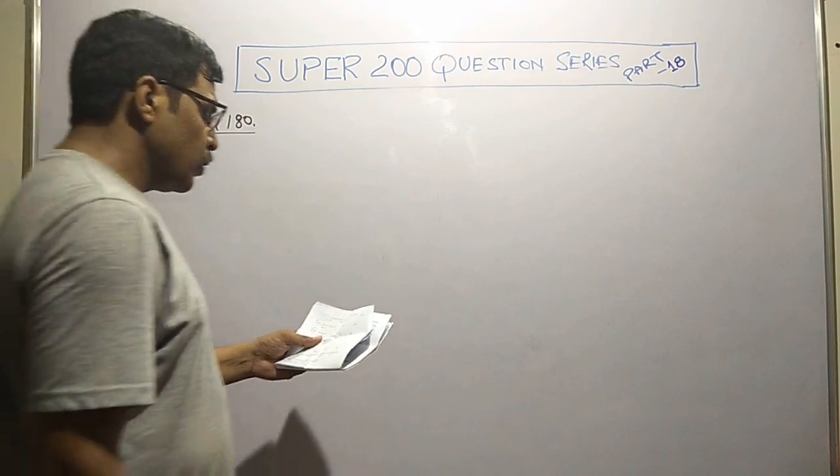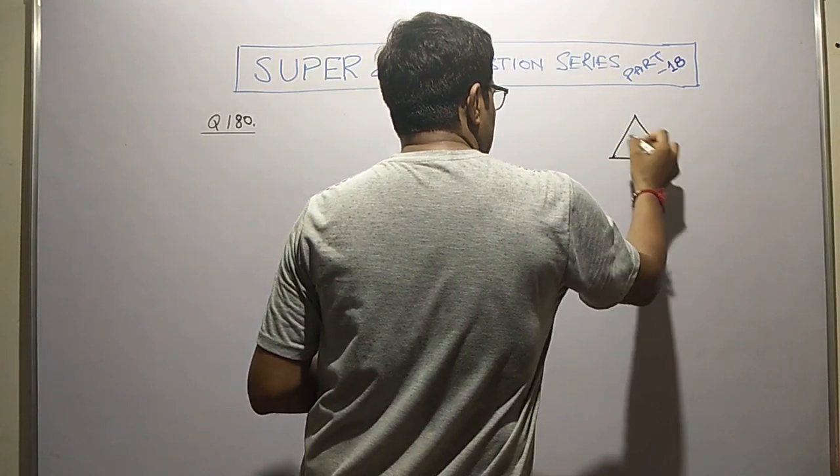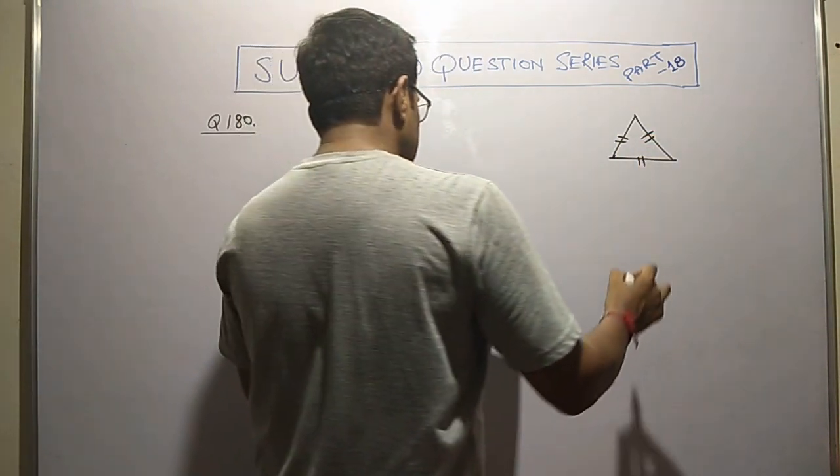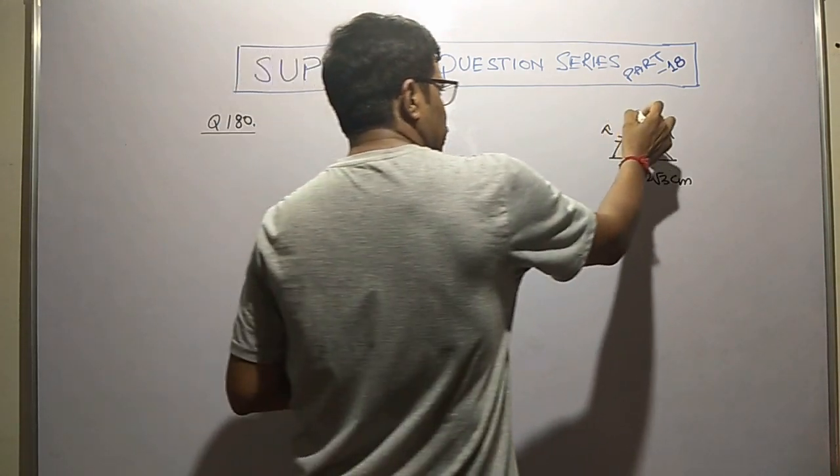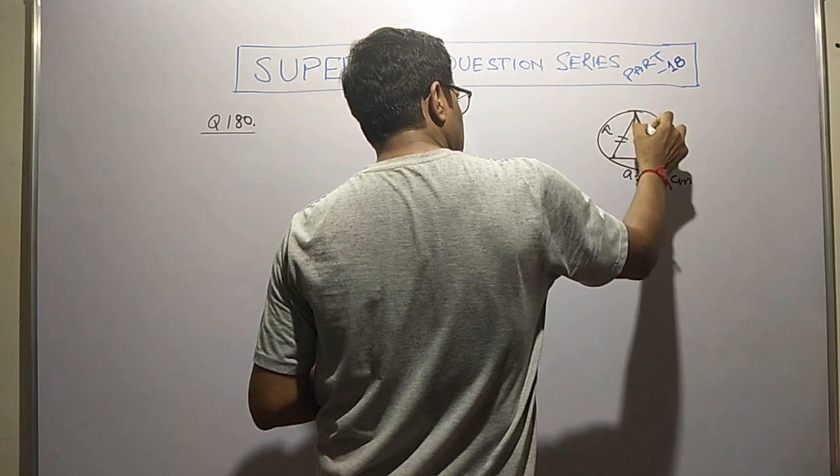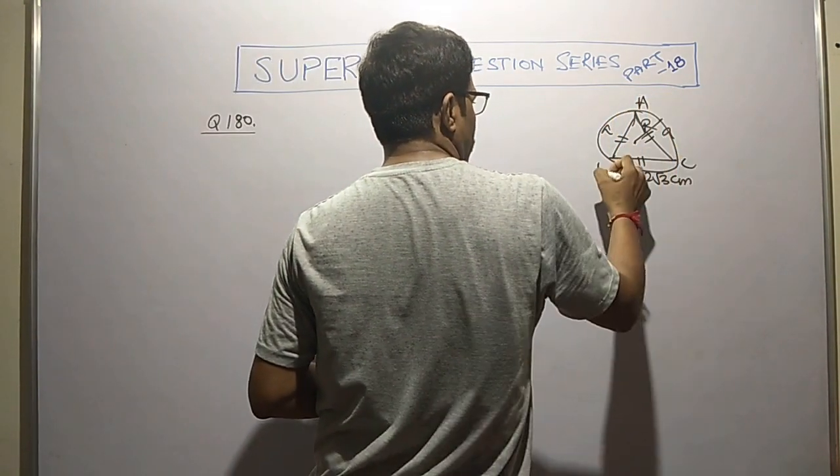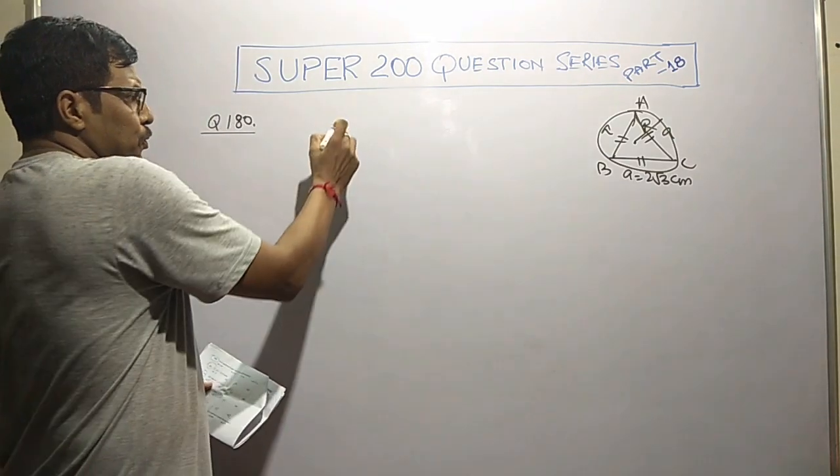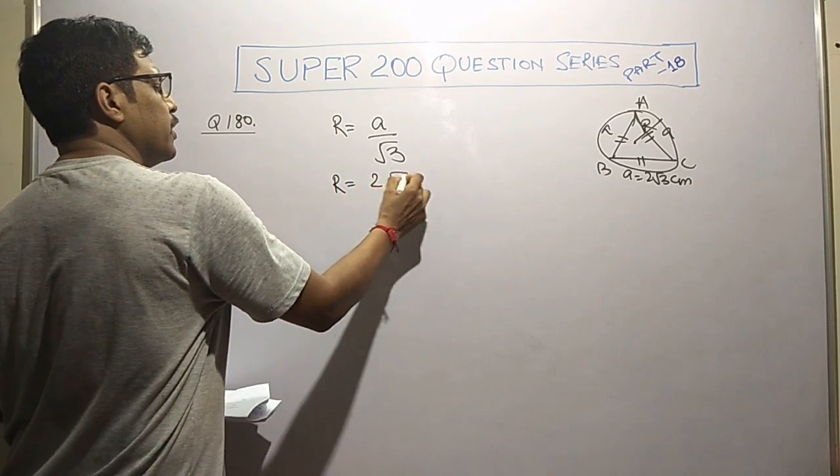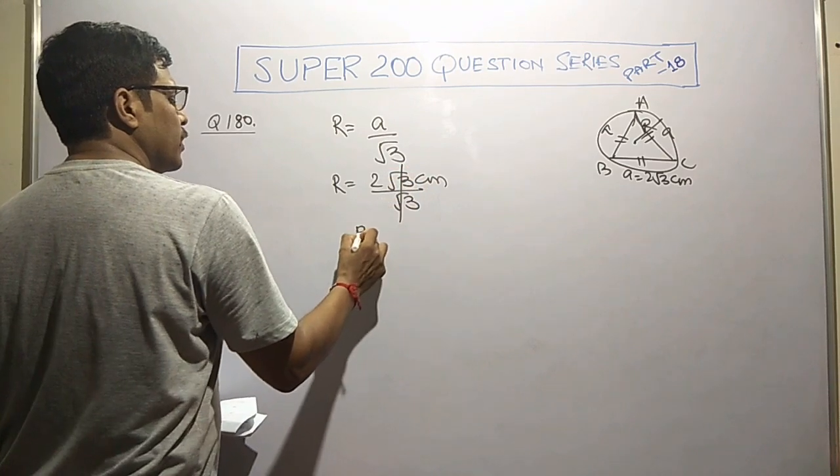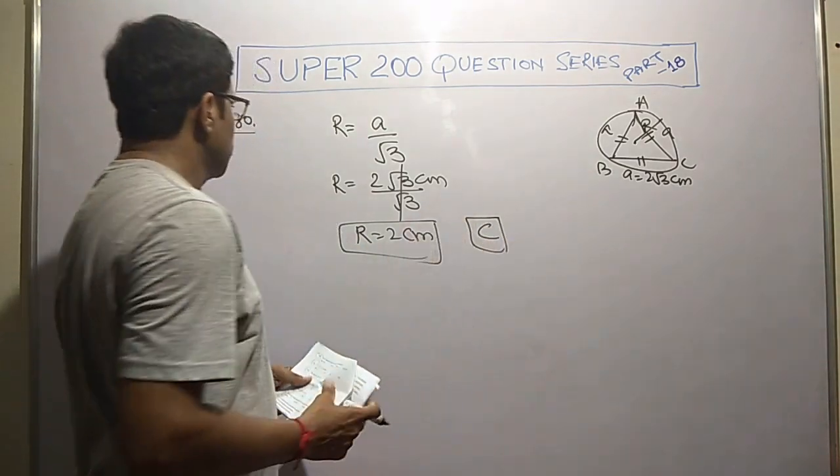Here is the last question of Part 18, question number 180. We are given that in an equilateral triangle, all three sides are same, each side is 2 root 3 centimeters. We are demanded the value of circum radius, means radius of the circle passing through these three vertices. The relation is: circum radius equals a by root 3. Put 2 root 3 divided by root 3, three cancels out, so r comes 2 centimeters, shown in option C.